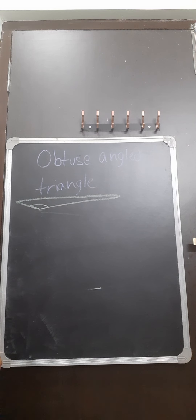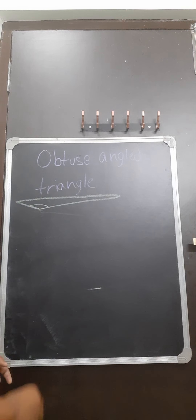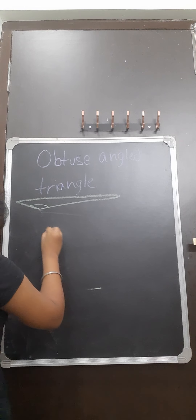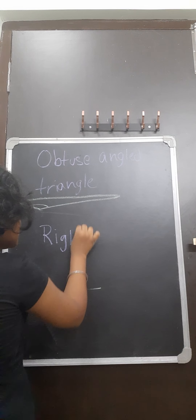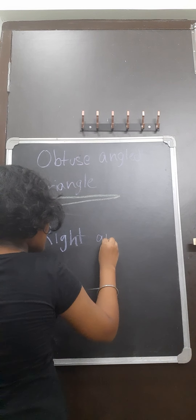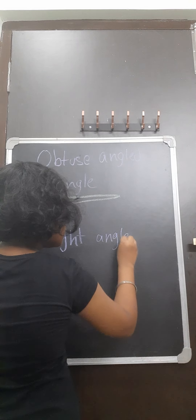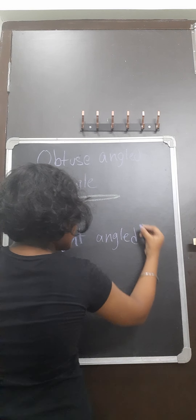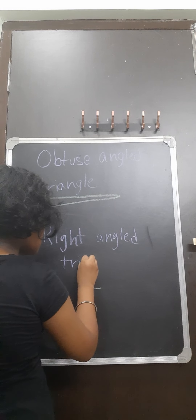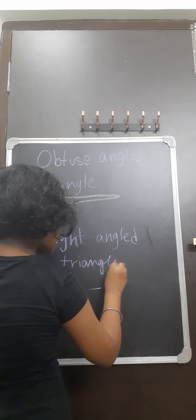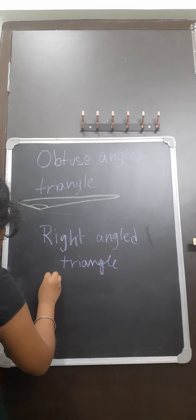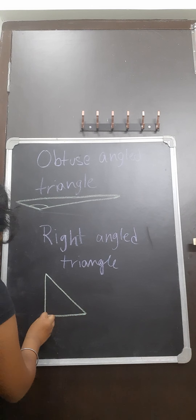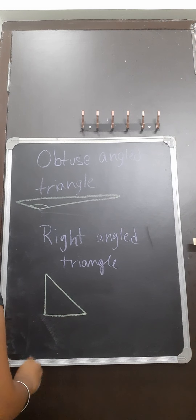Next, so when one of the angle of a triangle is Acute Angle, those kind of triangle are known as Acute Angle Triangle. So the triangle looks like this. So when one of the angle of the triangle is Acute Angle, those kind of triangle is known as Acute Angle Triangle.